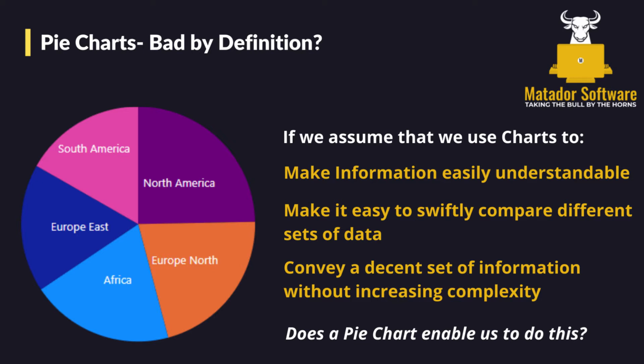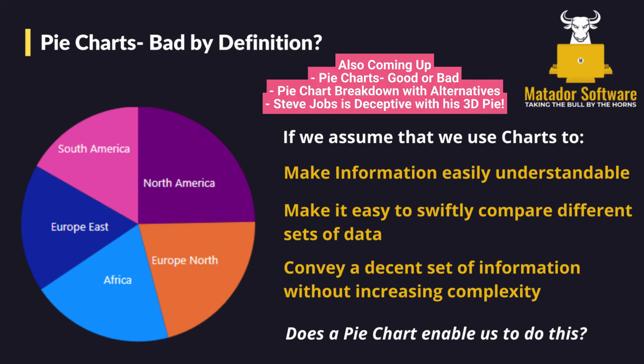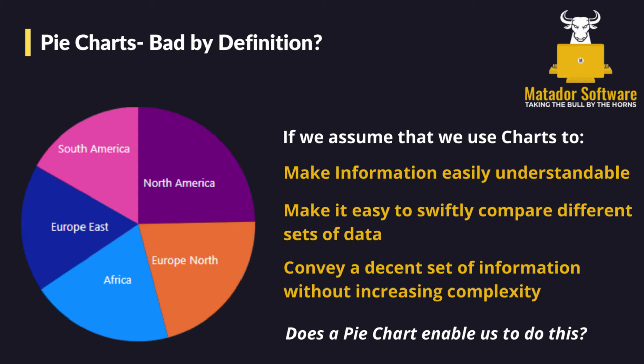So before I go into any opinions from either side of the fence — are pie charts bad by definition? If we assume that we use charts to make information easily understandable, make it easy to swiftly compare different sets of data, make data-driven decisions in an instant, or convey a decent set of information without increasing complexity, does a pie chart enable us to do this? Within the case against pie charts, the basic premise is that pie charts are poor at communicating data, they take up a lot of space and are harder to read than the alternatives, such as a bar chart. It is a fact that the brain is not very good at comparing the size of angles, and because there's no scale, reading accurate values can be difficult, and as you add more categories, segments, or colours, the problem then starts to get worse.